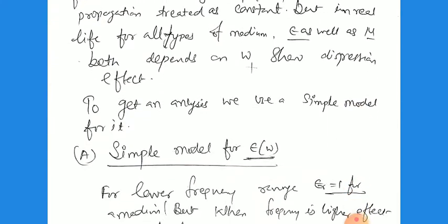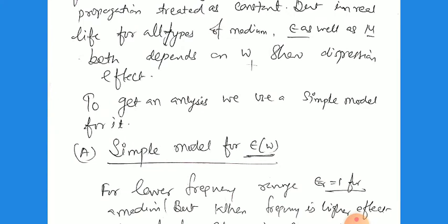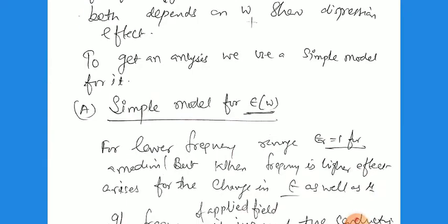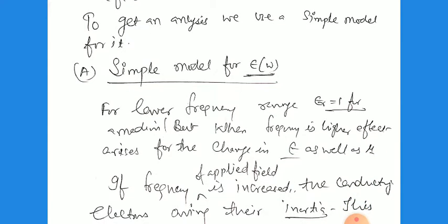So we will discuss this dispersion effect. To get an analysis, we use a simple model: ε as a function of ω, where ω is the frequency and ε is the permittivity. For lower frequency, ε is approximately equal to one for a medium, but when the frequency is higher, it causes a change in ε as well as μ. For the lower range, there is no change; it is linear. But at higher values, there will be dispersion.